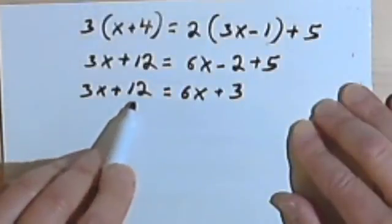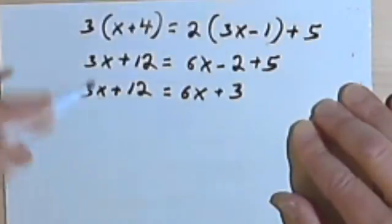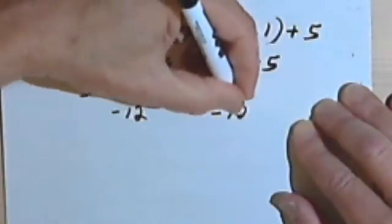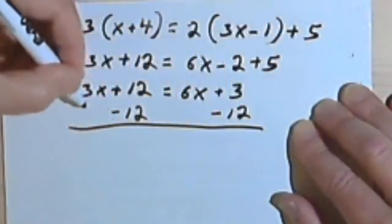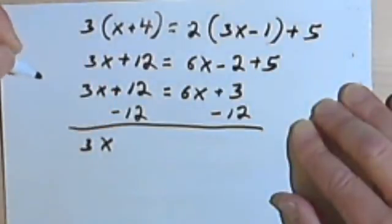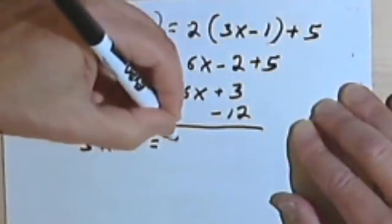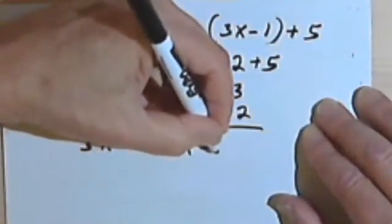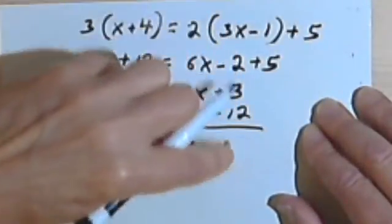I'd like to get rid of this 12 from the left side. So I'll subtract 12, subtract 12. My left side is now just 3x. My right side is 6x. 3 minus 12 is negative 9. Oops, that should be a 9.